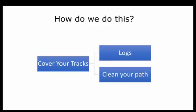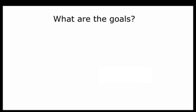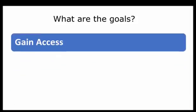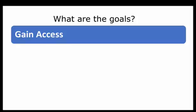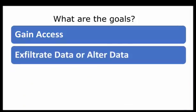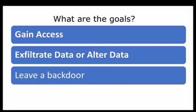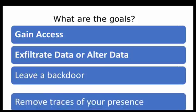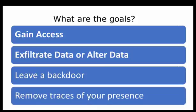Okay, so now that we've gone through the phases, what are the actual goals of system hacking? Let's go through them in a phased approach. First, we gain access. Then we exfiltrate data or alter data. Leave a backdoor so we can get in at some later point should we need to. And then finally, remove all traces that you have been on the system.